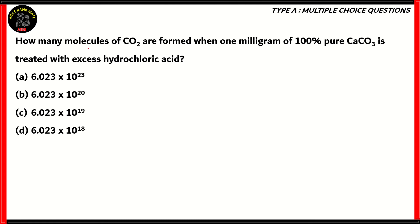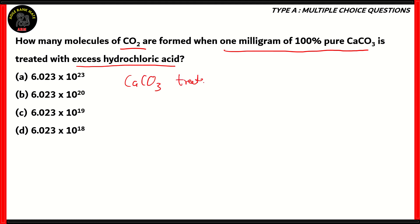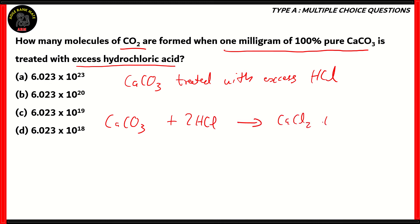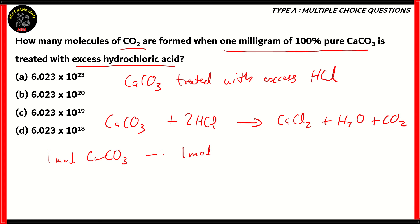Now let's look at this question. How many molecules of CO₂ are formed when one milligram of 100% pure CaCO₃ is treated with excess hydrochloric acid? For that question, we need to understand the reaction where calcium carbonate is treated with excess hydrochloric acid. The equation goes like this: CaCO₃ + 2HCl (excess) → CaCl₂ + H₂O + CO₂. So 1 mol of CaCO₃ gives you 1 mol of CO₂.